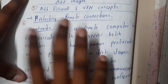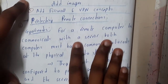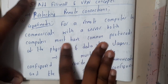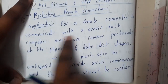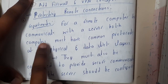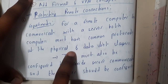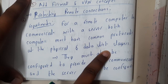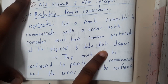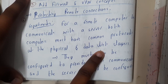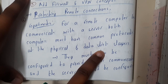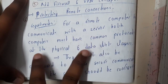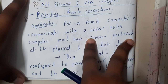We will be discussing how two systems, two processes, or two programs communicate with each other in a secured way. For a remote computer to communicate with the server, both computers must have a common protocol at the physical and data link layer. For example, assume you want to call your friend — both of you will be using your names or nicknames, meaning there should be something common, which is the common protocol.